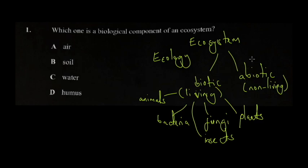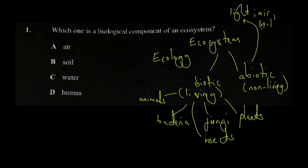The abiotic components are non-living. You're looking at sunlight, air, soil, and nutrients — nutrients are non-living. All these components are called components of the abiotic part of the ecosystem. The interactions of all of this are studied in ecology.